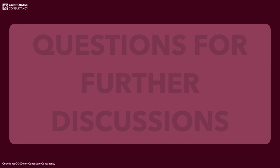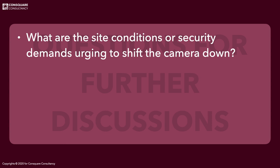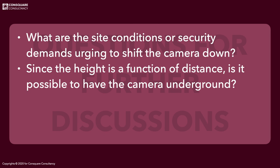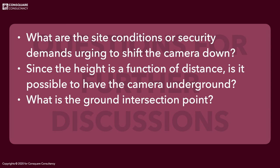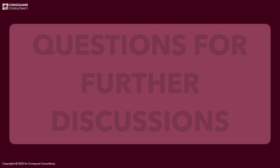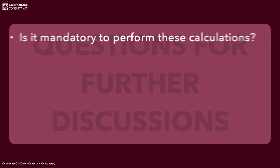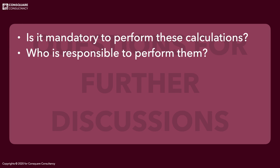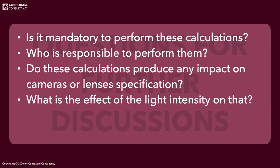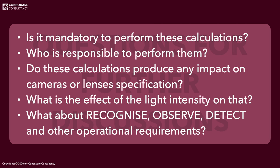Questions for further discussion: What are the sight conditions or security demands that urge shifting the camera down? Since height is a function of distance, is it possible to have the camera installed underground? What is the ground intersection point? What about CCTV design tools? Is it mandatory to perform these calculations? Who is responsible for performing them? Do these calculations impact camera or lens specification? What is the effect of light intensity? And what about the Recognize, Observe, Detect, and other operational requirements?